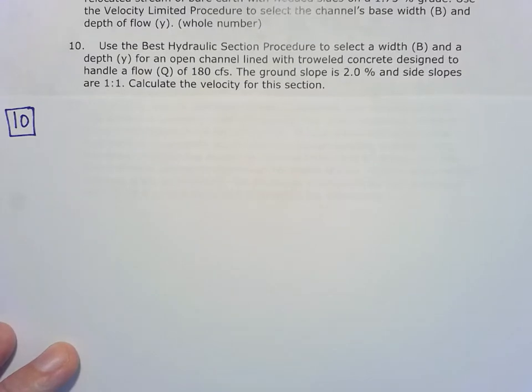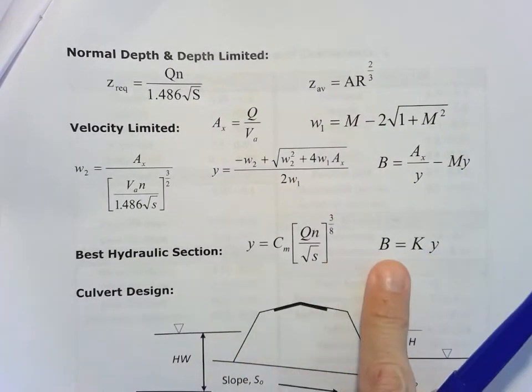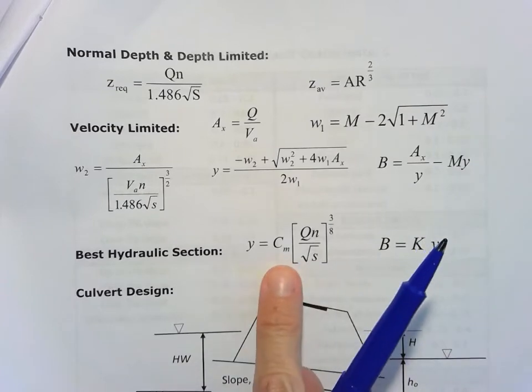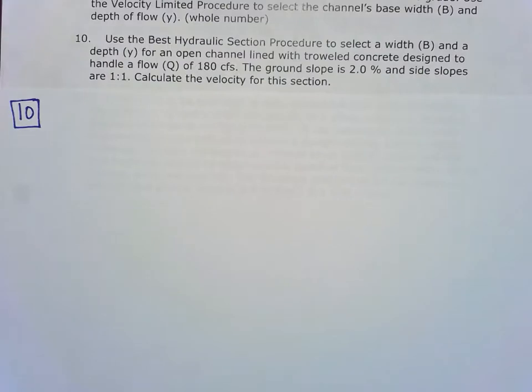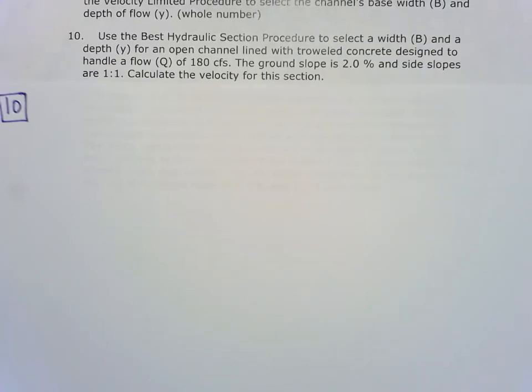First thing you need to know for best hydraulic section is that we're going to use these two formulas to find the depth and the base width, and they're based on these variables C_M and K. We have a table in your handout for the variables C_M and K, and you'll see they're dependent on your side slope, on your horizontal slope here.